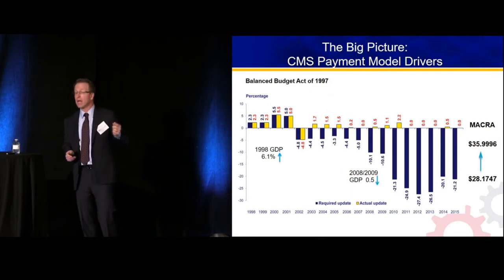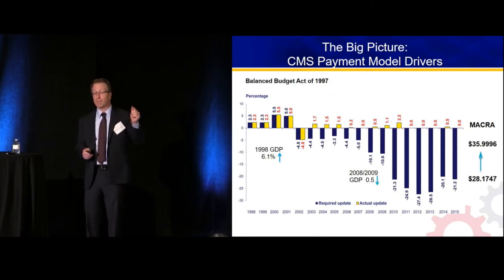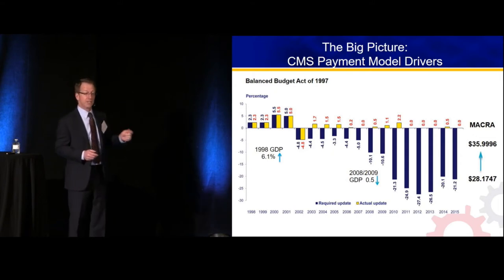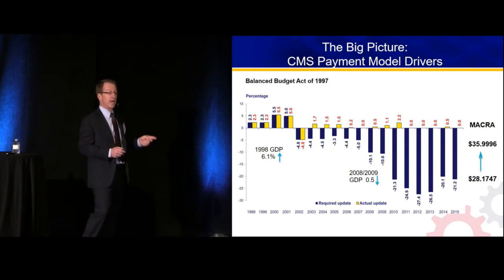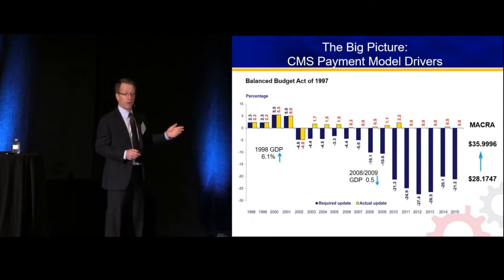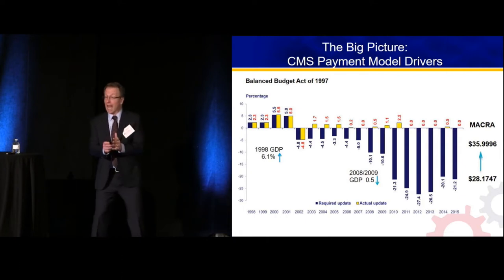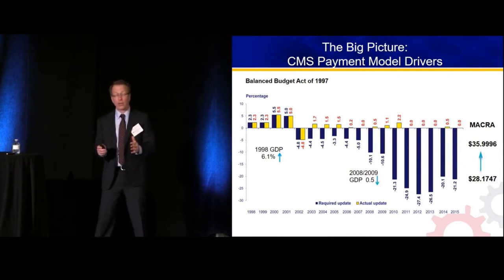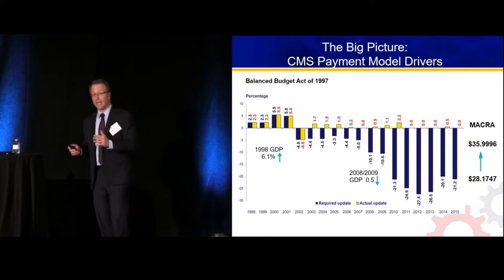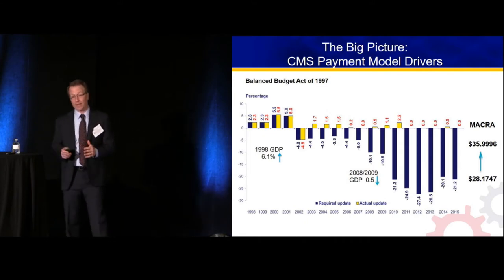What started to happen, particularly in our EDs, was an explosion of complex and expensive imaging — CT, ultrasound, VQ, MRI, MRA. And now we start to have a gap between the growth in the Medicare budget and the growth in the tax base.